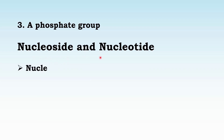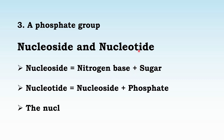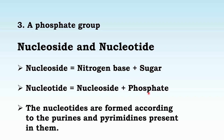Nucleoside and nucleotide: A nucleoside is a nitrogenous base plus sugar. A nucleotide is a nucleoside plus a phosphate group. So a full nucleotide consists of a nitrogenous base, a sugar, and a phosphate group. Nucleotides are formed according to the purines and pyrimidines present in them.